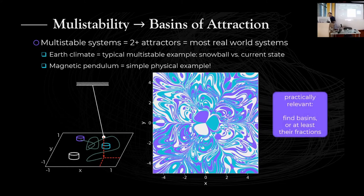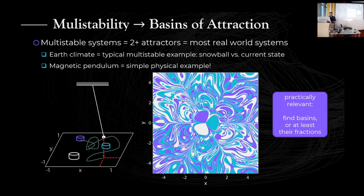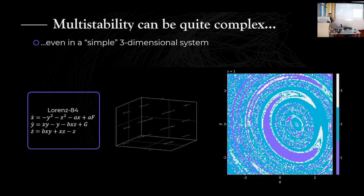That looks great, but here we have the challenge of what is practically relevant. It's nice if you can compute the entire thing, but this is actually really expensive. At least you'd like to find the attractors and the fractions of their basins of attraction — probabilistically, if I had a random initial condition somewhere in the state space, what is the probability it would go to one of the three attractors? In reality, multi-stability is often quite complex even for simple systems.